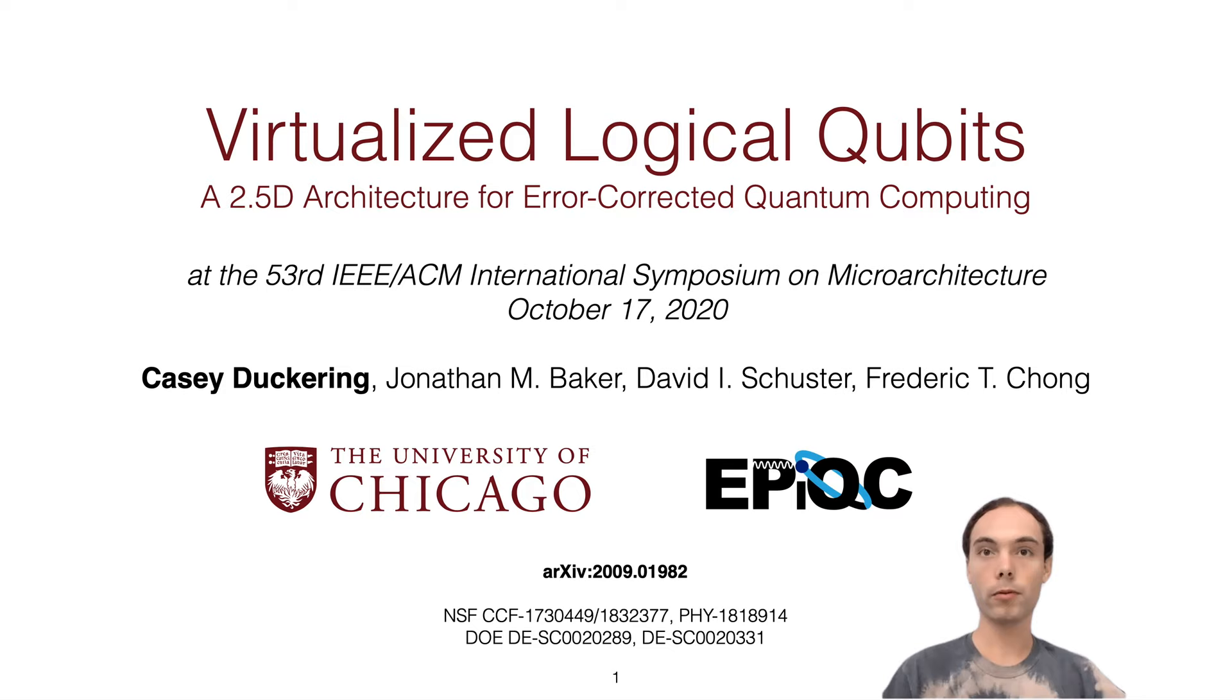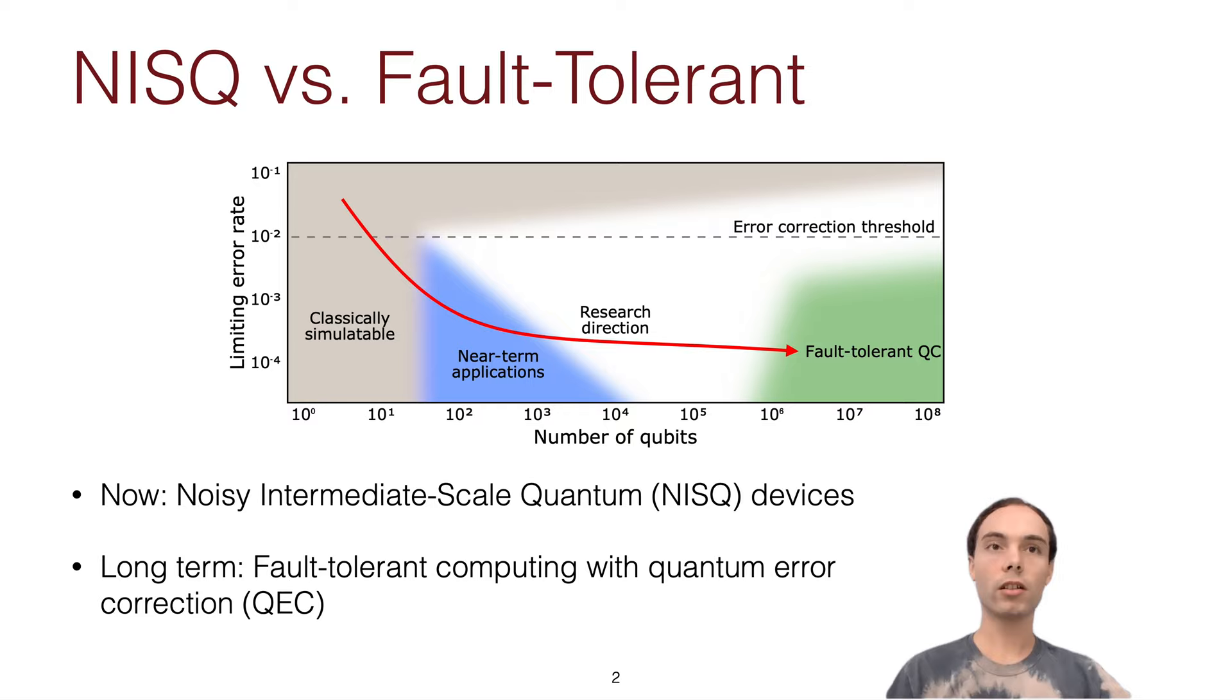So currently we are in the NISQ era of quantum computing with noisy small devices that may become useful for some things, but the long-term goal for quantum computing is to reach fault tolerance where we need millions of qubits to perform well-known algorithms like Shor's and Grover's algorithm. While this is still a bit far out, we need to be considering potential architectures for these systems now so we can start developing the technology that we need for those.